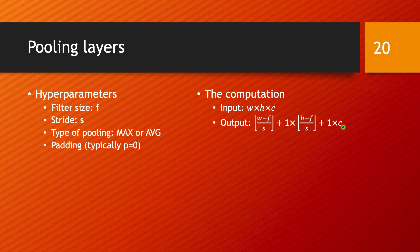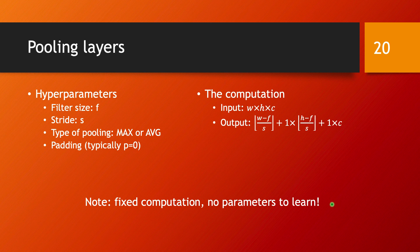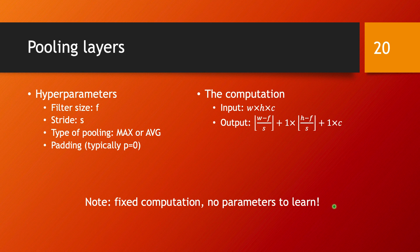One important note to have here is that in a pooling layer, you really have a fixed computation. You just do max or you do average depending on what type of pooling you decided to do. In particular, there are no parameters to learn. So adding a pooling layer doesn't add to the computational effort of training the network. It's just a fixed computation.